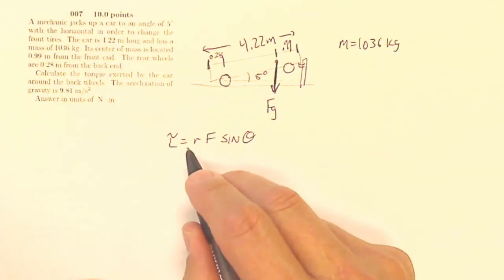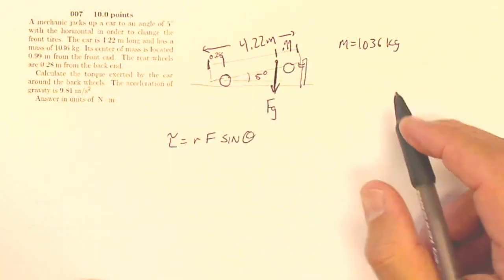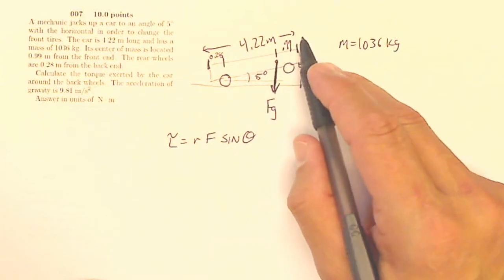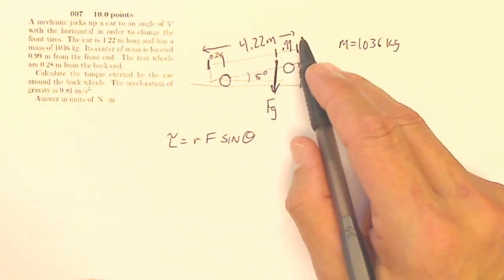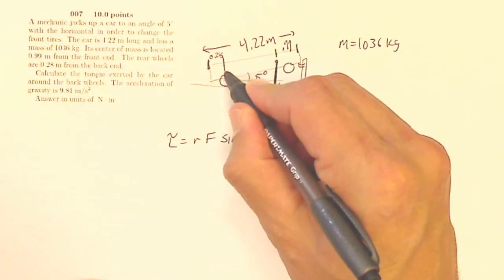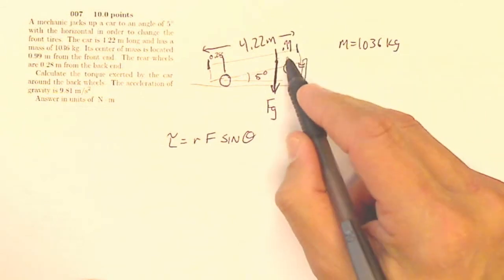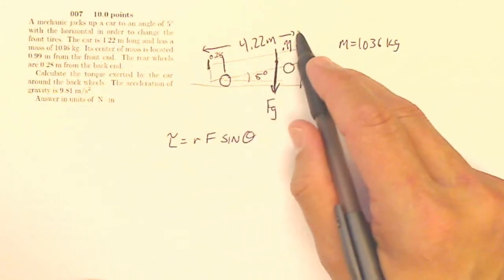What's my R with all of these weird measurements? Well, the car is 4.22 meters long. What I'm really interested in is the distance from the back wheels to the center of the car. So if this is 4.22,